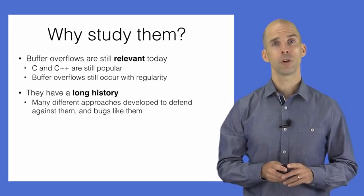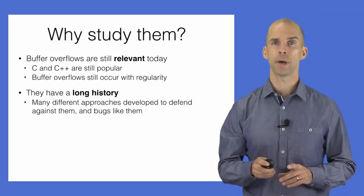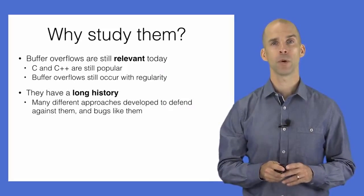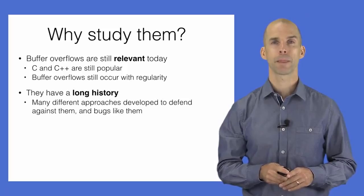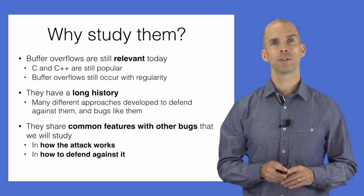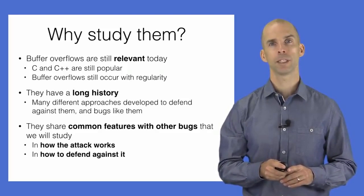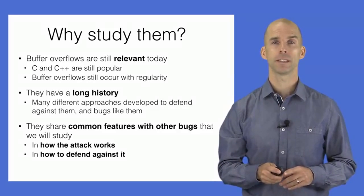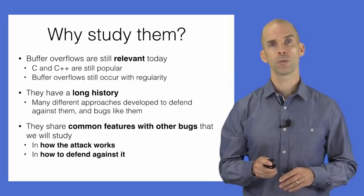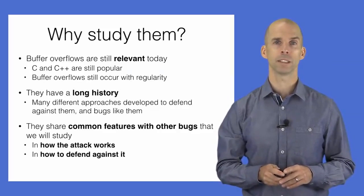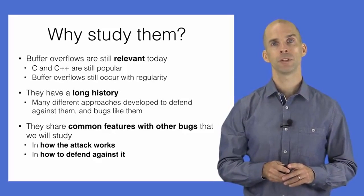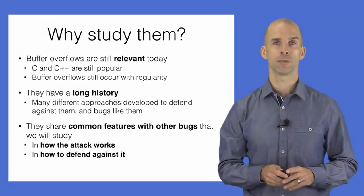During their long history, attackers and defenders have played a game of cat and mouse: as defenders address one weakness, attackers find a way to work around it. Understanding the technical details of that history — how the attack works and how to defend against it — teaches lessons relevant to other software weaknesses. C and C++ rank as two of the top three programming languages used today, according to a recent IEEE Spectrum Magazine study, making vulnerabilities particular to these languages highly relevant.